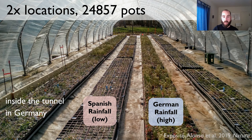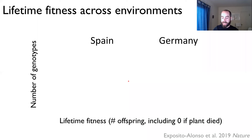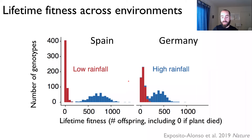In fall, we sowed seeds in pots inside a foil tunnel — this is the example from Germany, and an identical one was in Spain. We could replicate a Spanish rainfall and a German rainfall for half of the replicates inside the tunnel, which allowed us to separate rainfall effects from location effects such as temperature and photoperiod. At the end of spring, when they flowered, I quantified survivorship and offspring production of 25,000 pots.